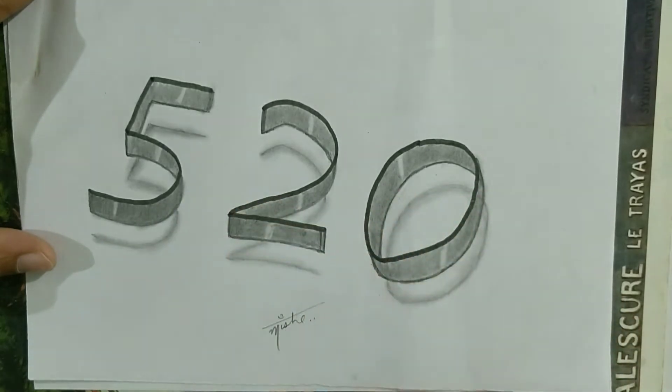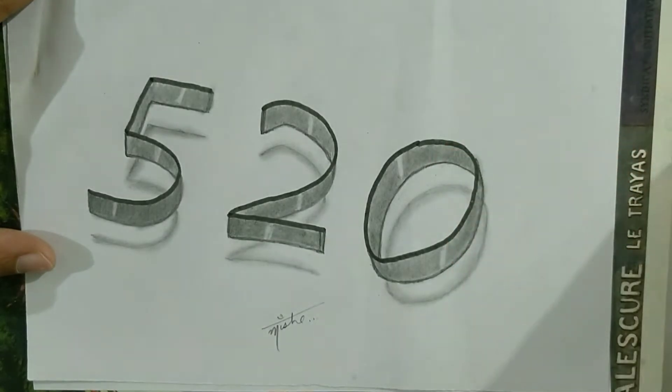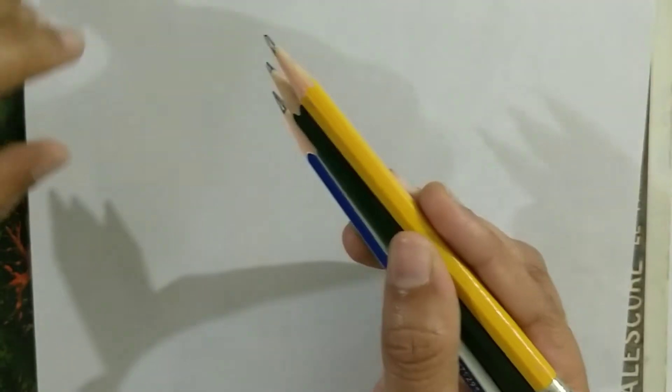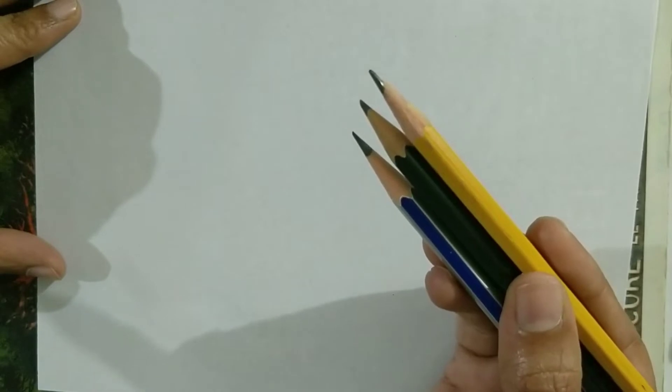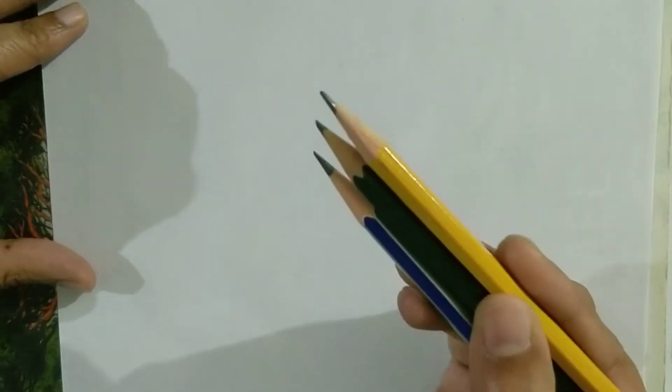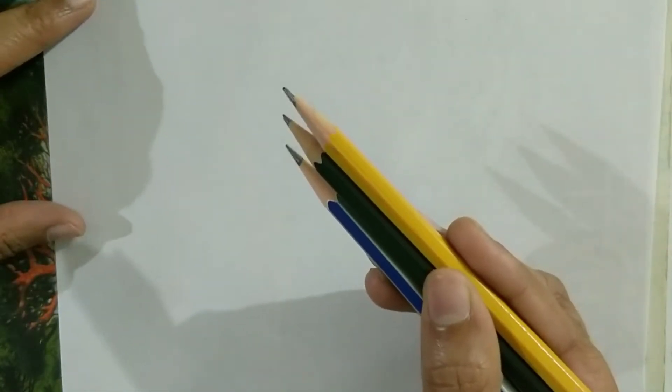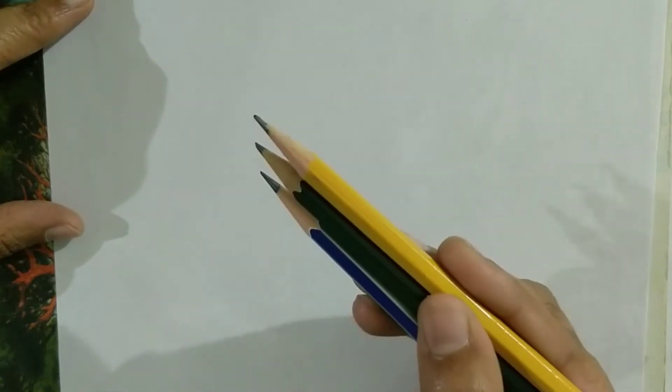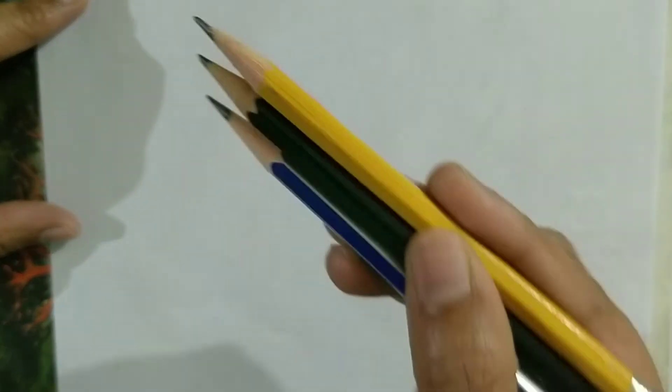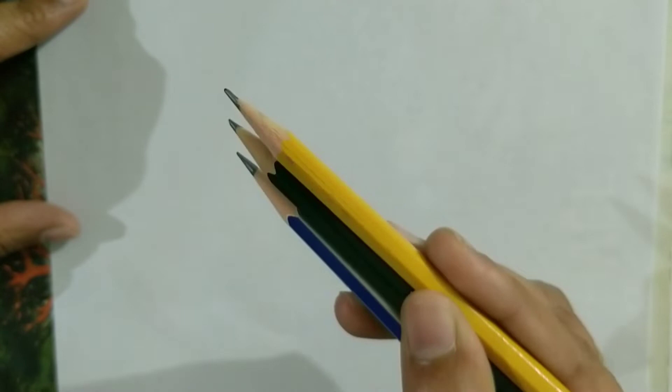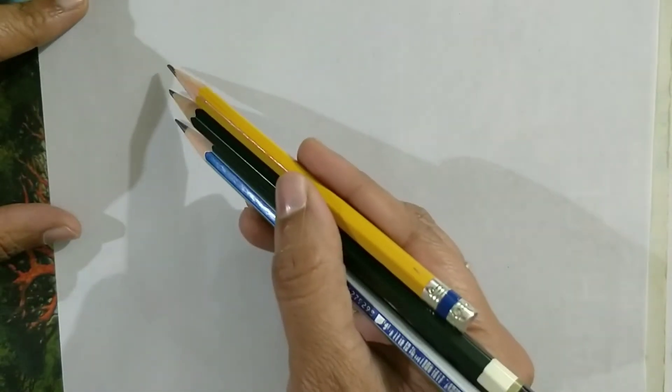So let's get started. I have my three pencils and I'm holding these three pencils one after the other. This particular activity is a little tricky. You have to keep repeating it to get the right result. For kids, you're going to have a little tough time holding these pencils together. Maybe I suggest start with two.